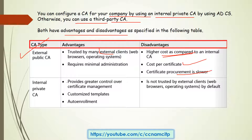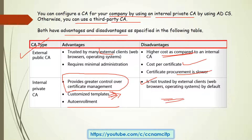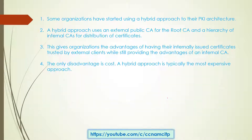The advantage of an internal private certificate authority is that it provides greater control over certificate management — your team can customize templates, control what kind of content and rights are included, and configure auto-enrollment. The disadvantage is that it is not tested by external clients, so web browsers and operating systems will not trust it by default. That is the disadvantage of using an internal private certificate authority.